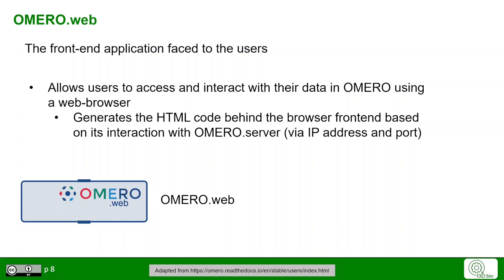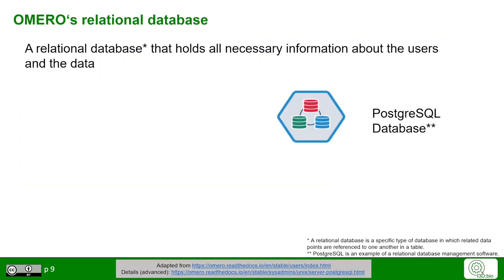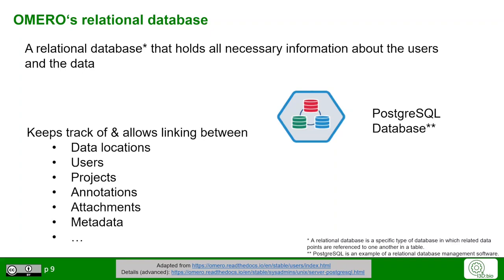OMERO Web communicates with OMERO Server by its IP address and port. The next component is the relational database, which holds all the necessary information about the users. PostgreSQL is a specific type of relational database management software. It keeps track of and allows linking between all the different file locations, users, organization and projects, annotations, attachments — in short, all the metadata.